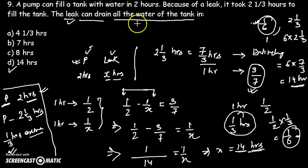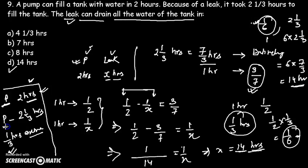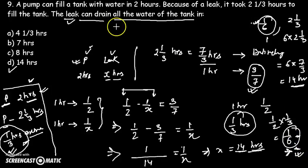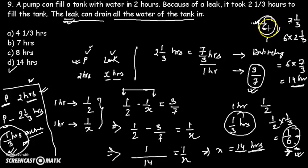So to completely drain the tank, multiply 6 by 2⅓ hours: 6 × 7/3 = 14 hours. In 14 hours, the leak can drain all the water completely from the tank. In summary: assuming no leakage, the pipe works 1/3 hours extra, pumping in 1/6 of the tank volume, which is exactly what leaks out over the full 2⅓ hours, giving 6 × 2⅓ = 14 hours.